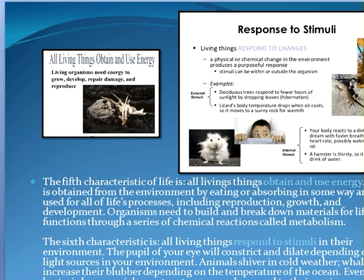The fifth characteristic is that all living things need to obtain and use energy for all the processes going on in the body and in the cells. This energy can be obtained from the environment by eating or absorbing it in some way. All food is needed for the chemical reactions in the body, and those chemical reactions are called metabolism. So you have to get energy somewhere so that you can use it.